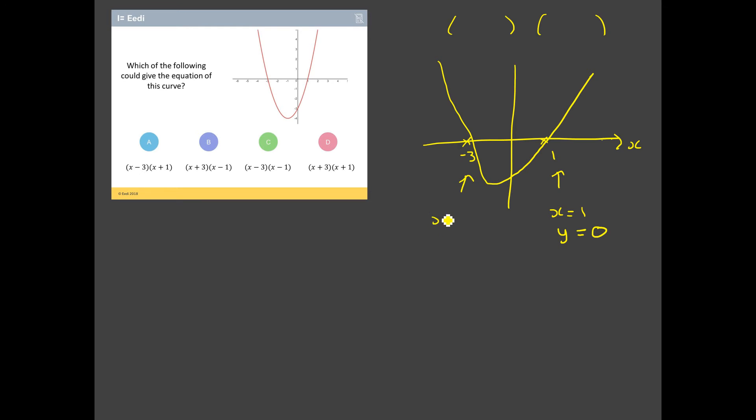Because every single point on this x-axis has a y value of zero. Likewise, look at that point. We know when x is equal to negative three, y is equal to zero. Same reason. So what I'm looking for here, when I'm looking for the equation of this curve, is I'm looking for brackets that when I substitute in x equals one, I get a y value of zero out the other side.